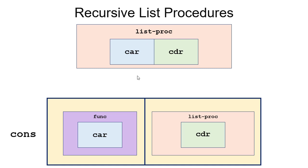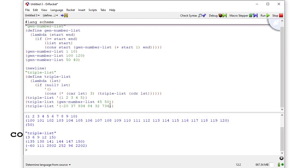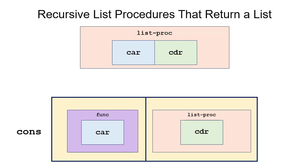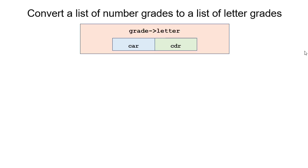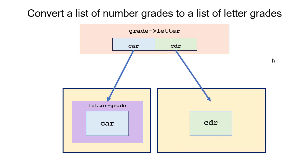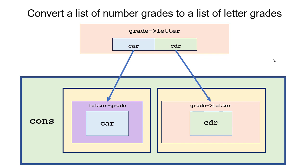Running this, you can see it triples every element in the list. This is a really common pattern to remember: when we want to create a list procedure that returns a new list modifying each element, we use this technique. For another example, suppose we want a function that takes a list of grades and converts them to letter grades. We'll see the same structure — applying a transform function to the car, then consing that onto a recursive call on the cdr.